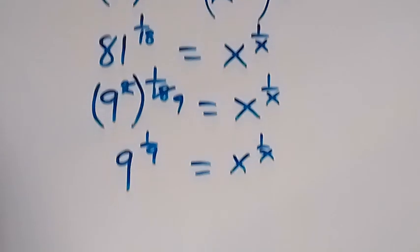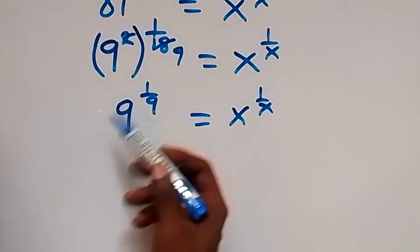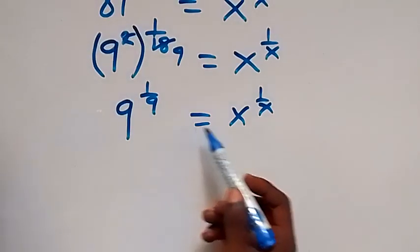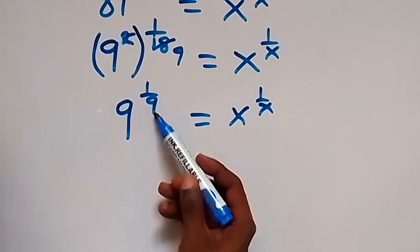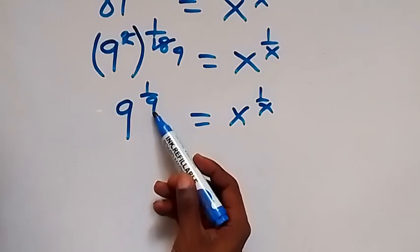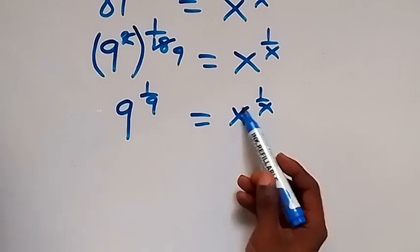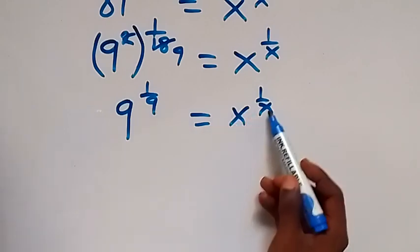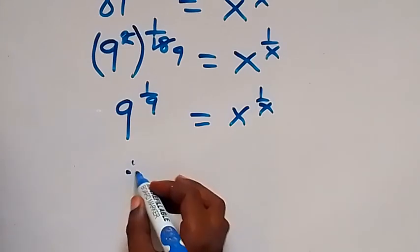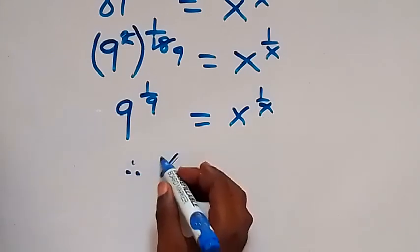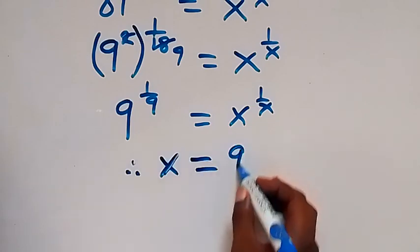So from here, when we look at this pattern, we have the same number we have as the base — it's what we have as the denominator of this fraction. Same thing here: we have the base as x, and x is the denominator here. So we can conclude that x equals 9.